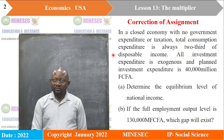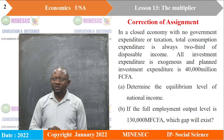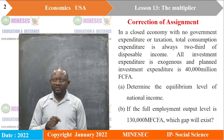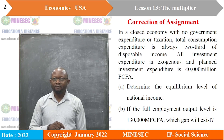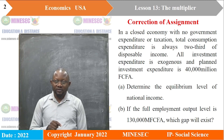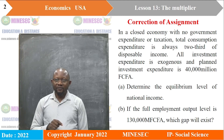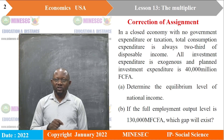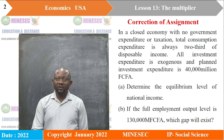This is the assignment. In a closed economy with no government expenditure or taxation, total consumption expenditure is always two-thirds of disposable income. All investment expenditure is exogenous, and planned investment expenditure is 40,000 million francs. The first question: determine the equilibrium level of national income. The second: if the full employment output level is 130,000 million francs, which gap will exist?